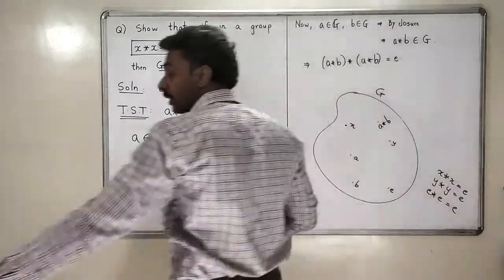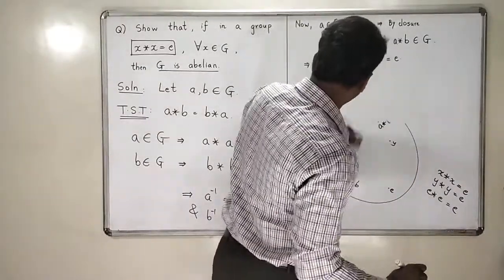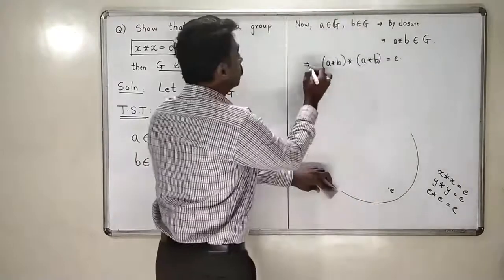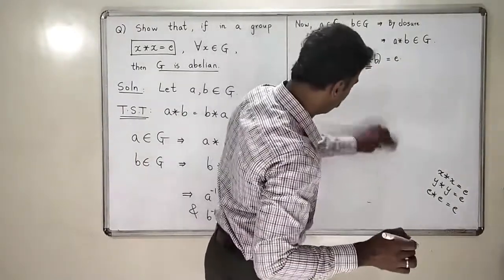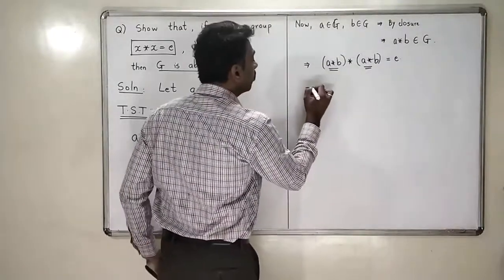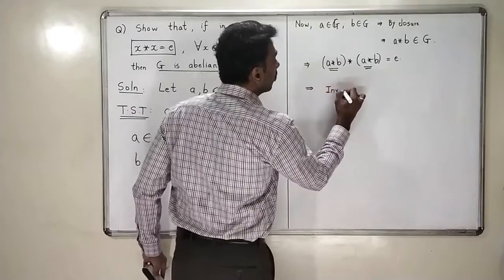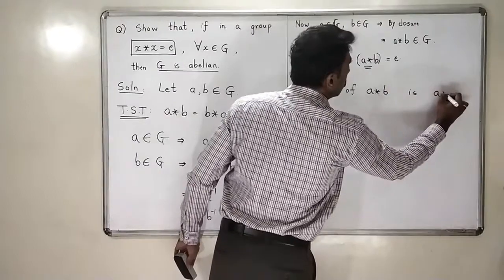And now what is the meaning of this again? This means that what is inverse of a star b by this expression. Who is the inverse of a star b? The inverse of a star b is also again a star b. So this means that inverse of a star b is a star b.